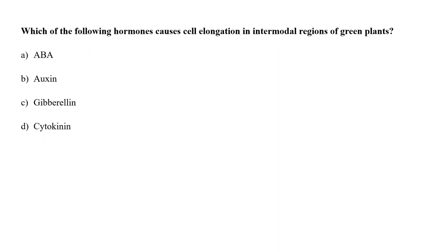Which of the following hormones causes cell elongation in internodal regions of green plants? A. ABA (abscisic acid), B. Auxin, C. Gibberellin, or D. Cytokinin? ABA is responsible for leaf abscission. Auxins promote stem elongation and maintain apical dominance. Cytokinins are responsible for lateral growth. Gibberellins are responsible for internodal elongation in genetically dwarf plants. So the correct answer is option C, gibberellin.